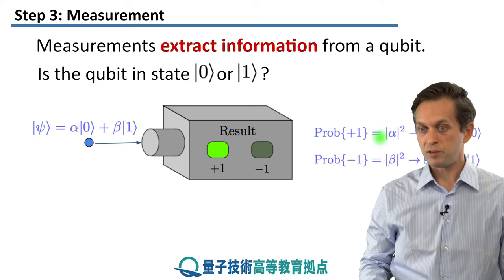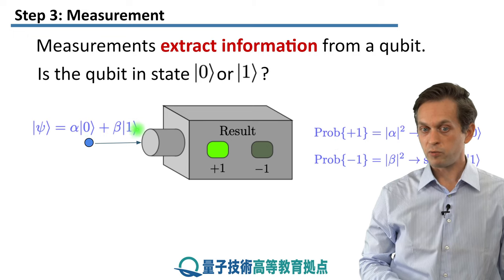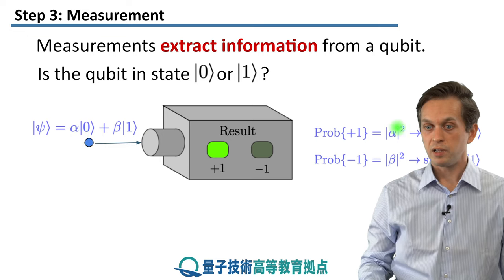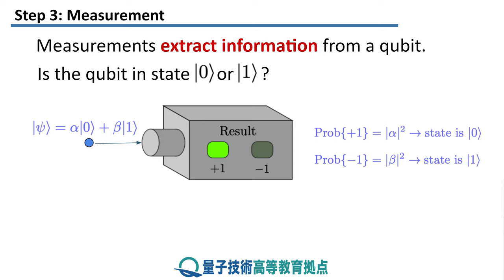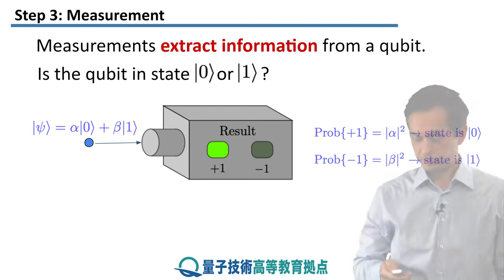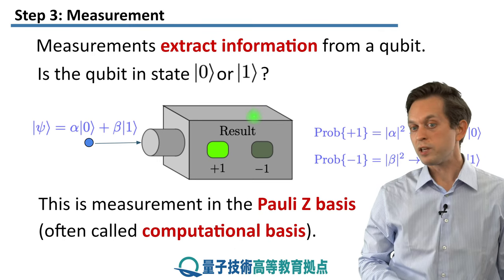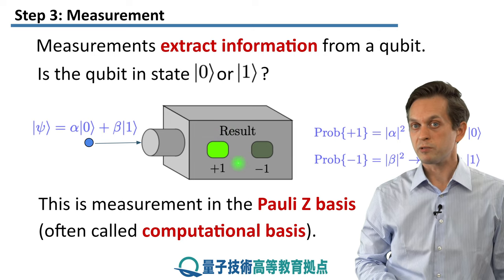The probabilities of these measurement outcomes — one corresponding to state 0 and one corresponding to state 1 — are given by these probability amplitudes. The probability of getting a +1 outcome is given by mod alpha squared, and the probability of a −1 outcome is given by mod beta squared. Immediately after the measurement, the state collapses either onto |0> or onto |1>. If you get a +1 outcome, the state is in state |0>; if you get a −1, the state changes from psi and is |1>. This particular measurement is referred to as a measurement in the computational basis, or in the Pauli z basis.